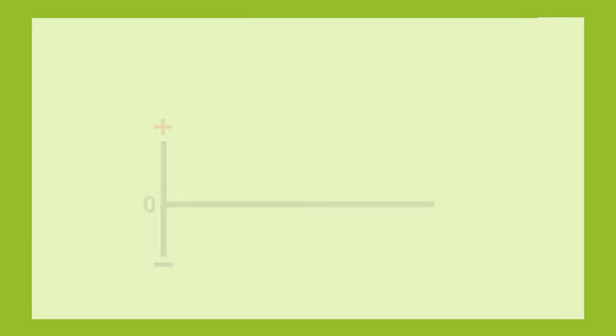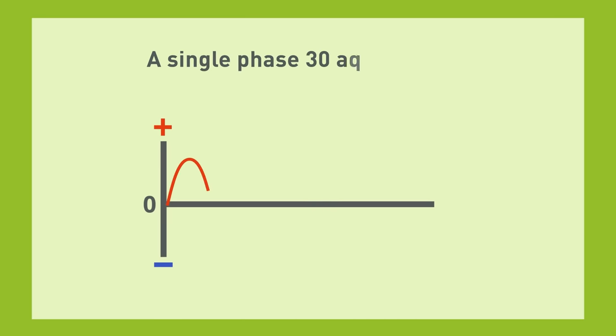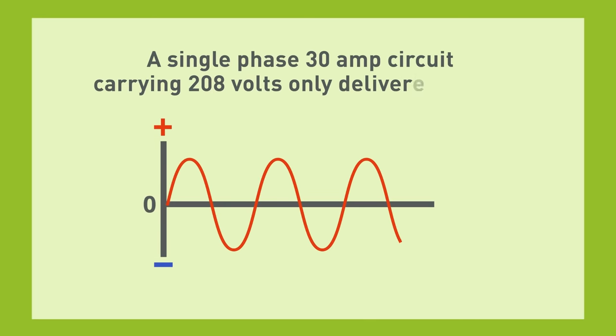In comparison, for a single-phase 30 amp circuit carrying 208 volts, you will only get 6.2 kilovolt amps. Basically, three-phase delivers more power.